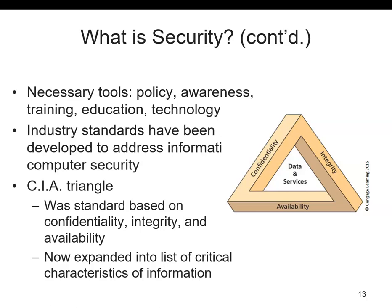The CIA triangle has been considered the industry standard for computer security since the development of the mainframe. It was based on three characteristics that describe the utility of information: confidentiality, integrity and availability — or CIA. This CIA triangle is now being expanded into a list of critical characteristics of information, so now it's not only three but more than that.